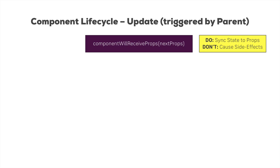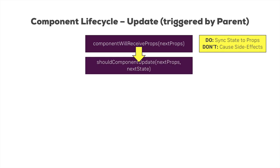After componentWillReceiveProps, a very interesting method is executed: shouldComponentUpdate. There we get two arguments — the upcoming props and the upcoming state — basically what triggered this update. This method may actually cancel the updating process. If you return true, the updating continues; if you return false, the updating stops. Returning false saves performance because React doesn't need to go through the whole component tree and call render. But it may also cause your application to show an incorrect DOM representation if used in the wrong way.